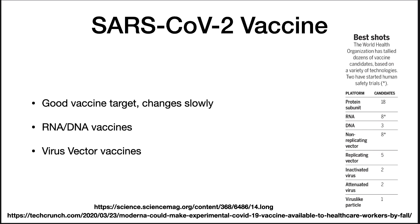Viral vector vaccines based upon proteins — often the spike protein — displayed in another type of virus have also been developed. The AstraZeneca and Johnson & Johnson vaccines are of this type and have both been shown to be effective. A potential advantage of the mRNA vaccines is the ability to quickly ramp up production and create enough doses to protect the general public, and it should be possible to alter the formula relatively quickly.